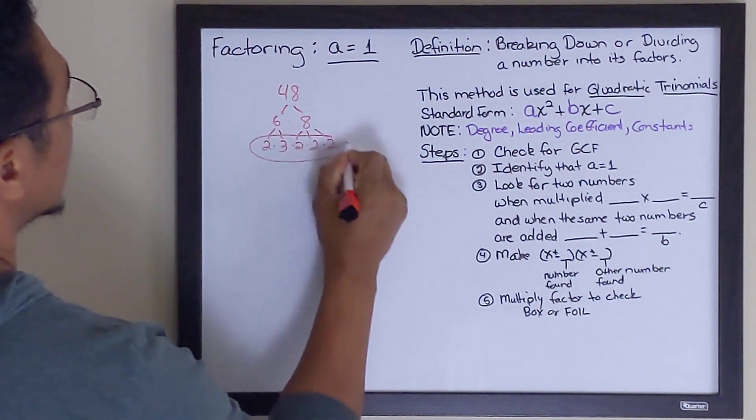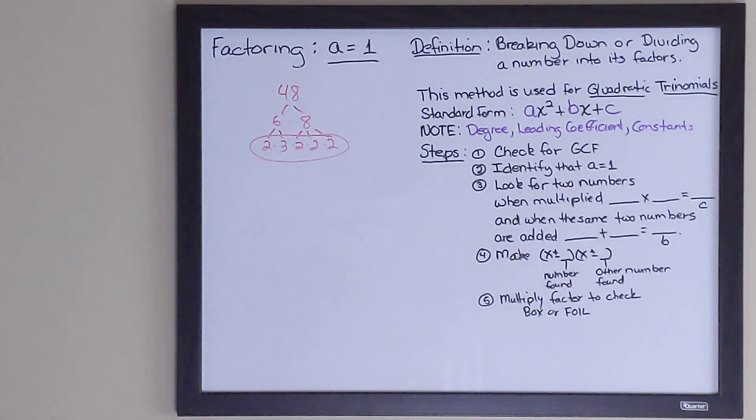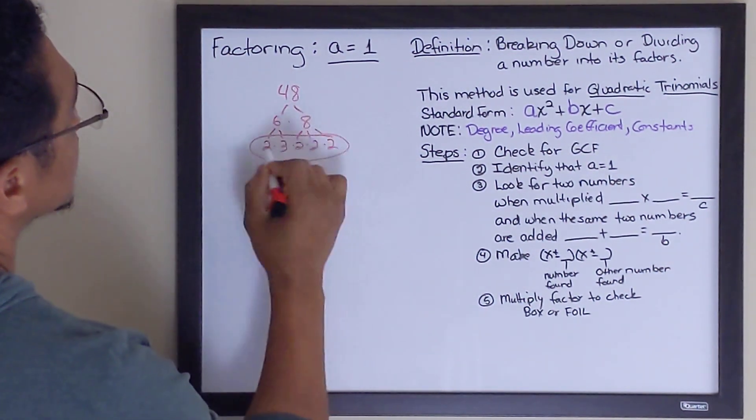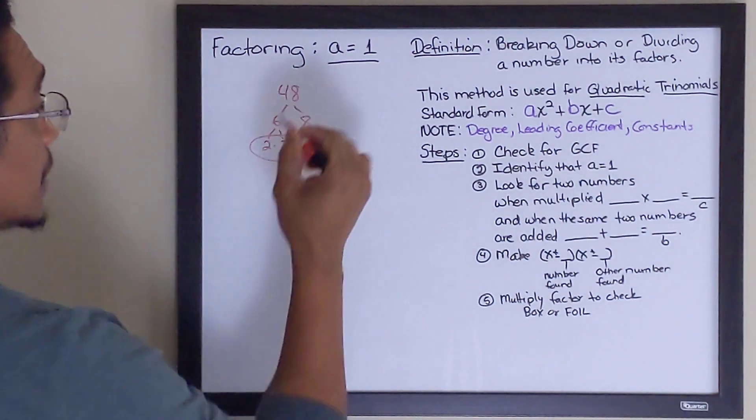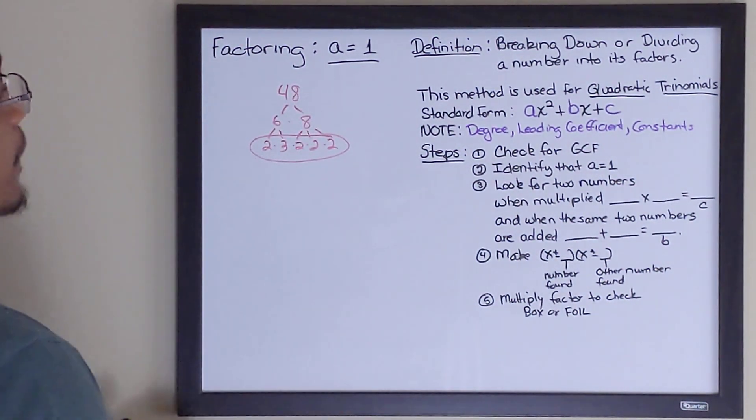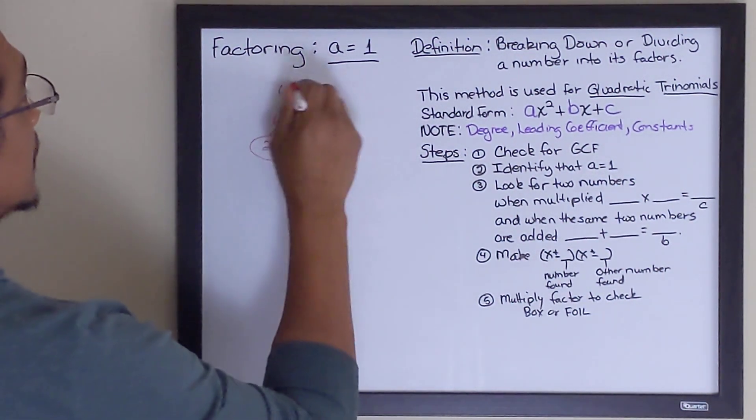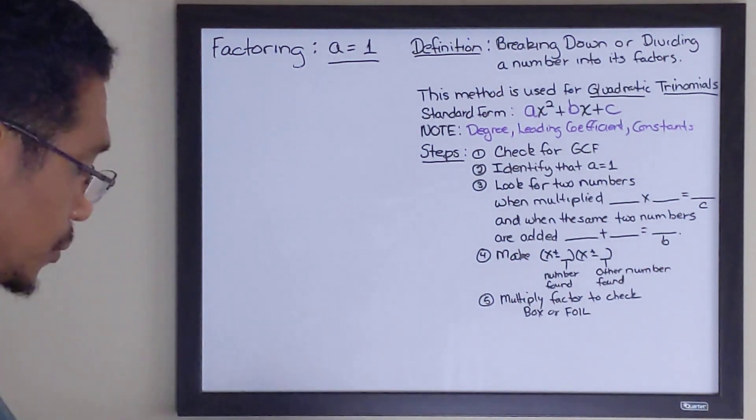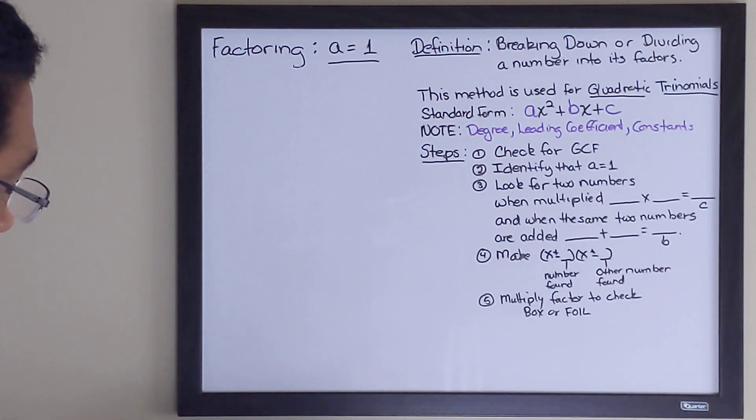So this is basically the answer. This is 48 and its factors. If I was to multiply all these numbers together, I would get 48. That is factoring. But we're not factoring with numbers in this case. We're going to be factoring with polynomials. Let's do two polynomial problems that we need to factor.